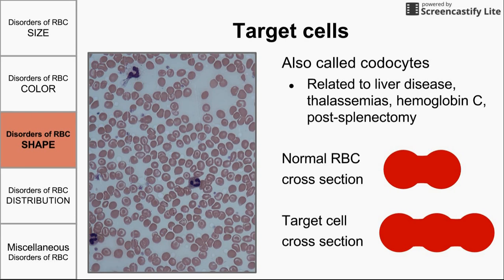First we have target cells, also called codocytes — named because they look like targets, which makes them easy to remember. They're related to liver disease, thalassemias, an abnormal form of hemoglobin called hemoglobin C, and are also seen post-splenectomy. Target cells are more wavy than normal red blood cells. Normal red blood cells are biconcave discs where each side dips in once; in a target cell, each side dips in twice, forming a target appearance when viewed on the blood smear.